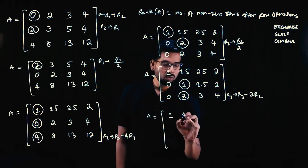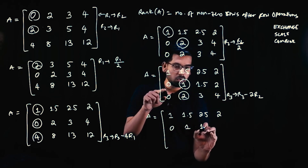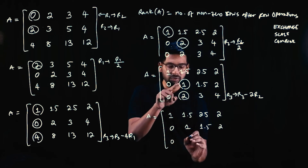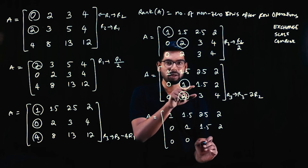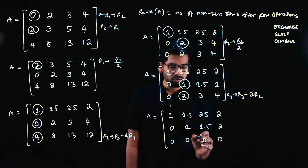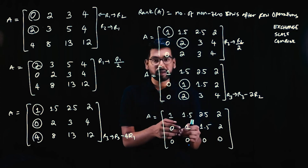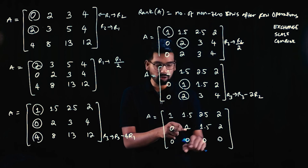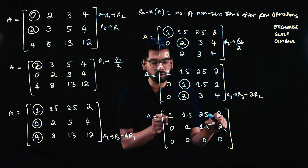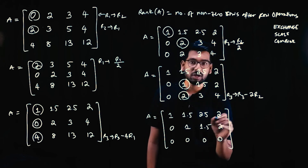After R3 = R3 minus 2 times R2: first row stays 1 1.5 2.5 2; second row stays 0 1 1.5 2; third row: 0 minus 2 times 0 is 0, 2 minus 2 times 1 is 0, 3 minus 2 times 1.5 is 0, 4 minus 2 times 2 is 0. So the third row becomes all zeros. We cannot do any more row operations — zero rows cannot affect non-zero rows.